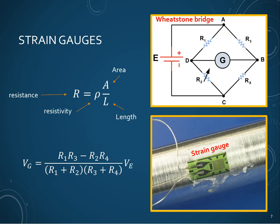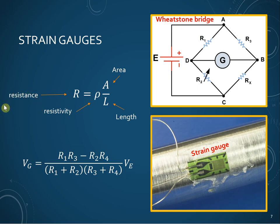Another commonly used sensor device is a strain gauge, which is usually used to measure compression and elongation. Strain gauges are essentially long wires that are stretched and whose resistance changes. The resistance of a material is a function of its resistivity, which is a material property, as well as its area and length. Whenever you elongate a wire, you're changing its length and also its area — the area gets smaller due to the Poisson ratio — and because of that the resistance changes. This change in resistance is often quite small, so we create a device called the Wheatstone bridge, comprised of multiple resistors and a strain gauge.